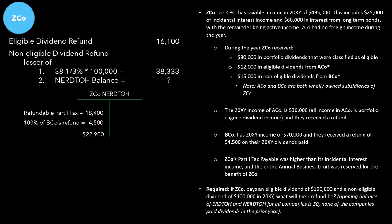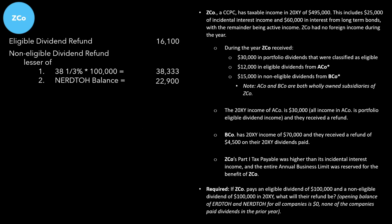We plug $22,900 into the original non-eligible dividend refund calculation. It's the lesser of: 38⅓% of $100,000, and the non-eligible RDTOH balance of $22,900. The smallest of those two amounts is $22,900. But there's something we need to do for non-eligible dividend refunds as best practice. The difference between 38⅓% × the dividend paid and the non-eligible RDTOH balance is an excess amount, calculated to be $15,433.